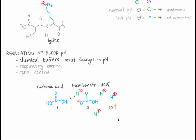But imagine the pH of the blood decreases — in other words, the hydronium ion concentration increases and there's more H+ around. As a result, more bicarbonate ions combine with H+ from hydronium to form carbonic acid. This decreases the hydronium ion concentration, and thus the pH increases. So buffers respond to a decrease in pH by increasing pH.